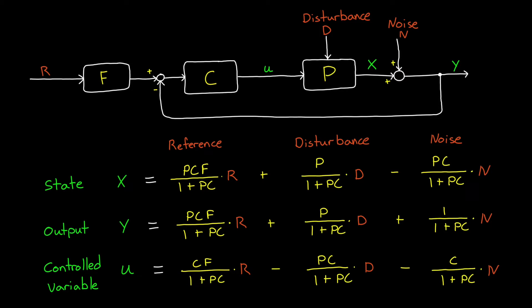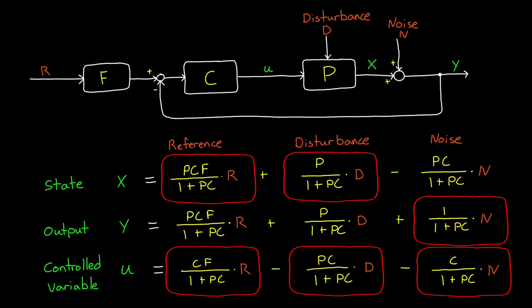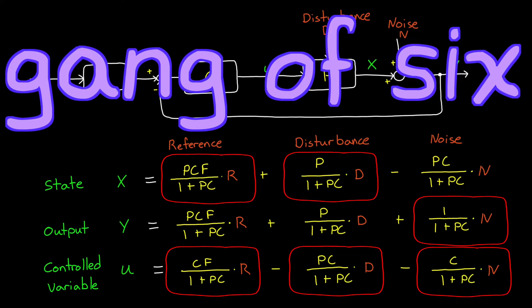And with these equations, we now have a way to analyze things like the step response or the frequency response to see how, for instance, how noise impacts the state of the system or how disturbances impact the output. All of the design questions we just asked at the beginning are wrapped up in these nine relationships. But if you look closely, you'll notice that there's really only six unique relationships here. These are the so-called Gang of Six transfer functions.